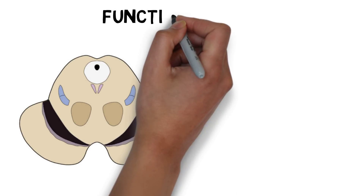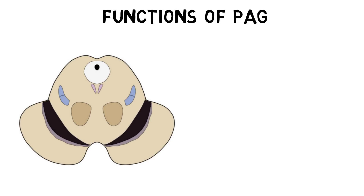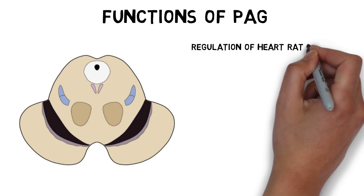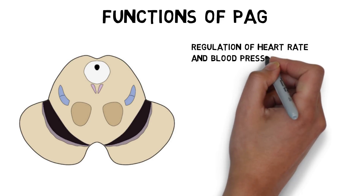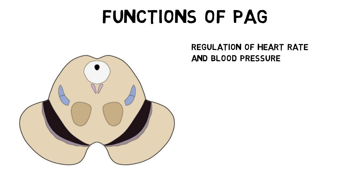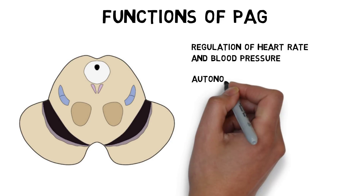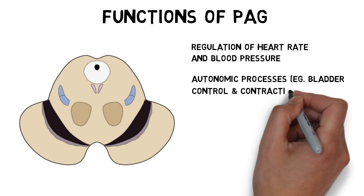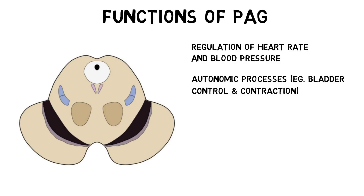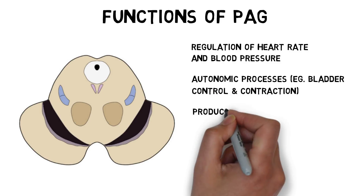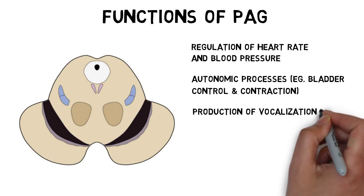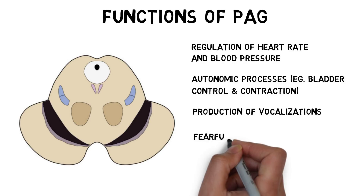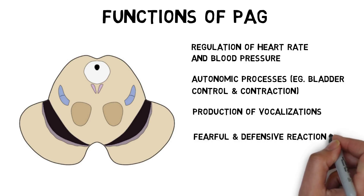There are a number of functions that have been connected with the PAG, including the regulation of heart rate and blood pressure, management of autonomic processes like bladder control and contraction, production of vocalizations, and production of fearful and defensive reactions.